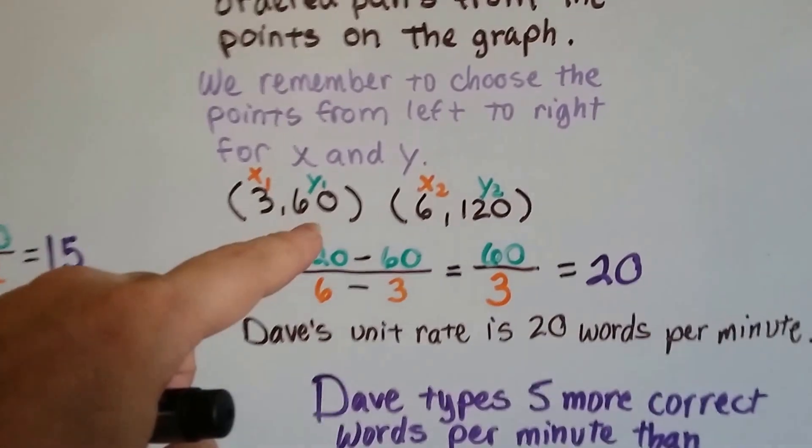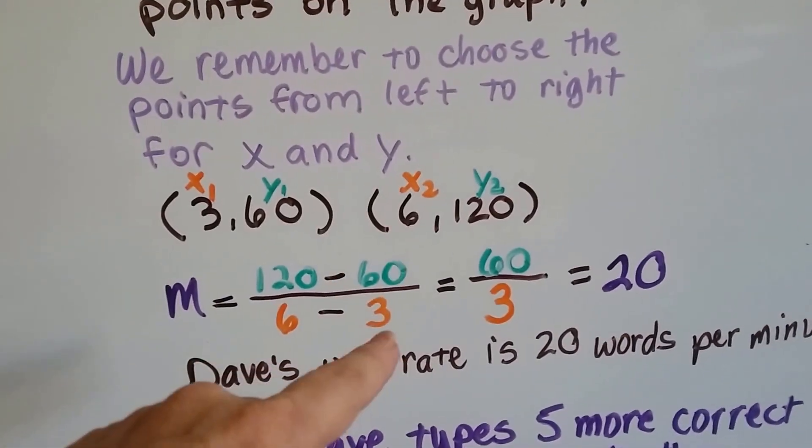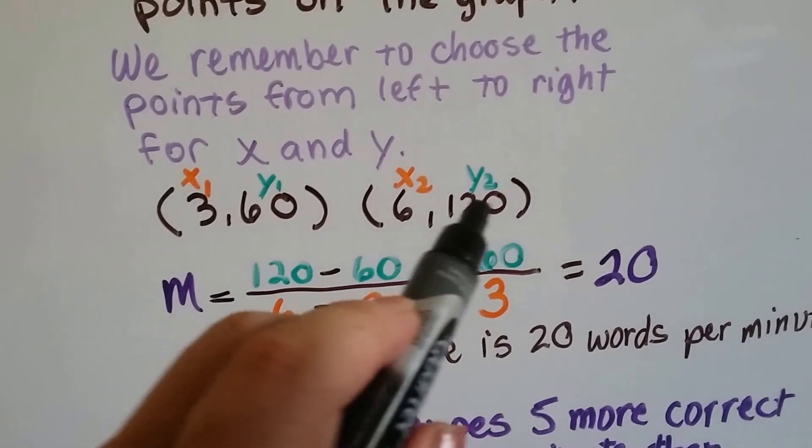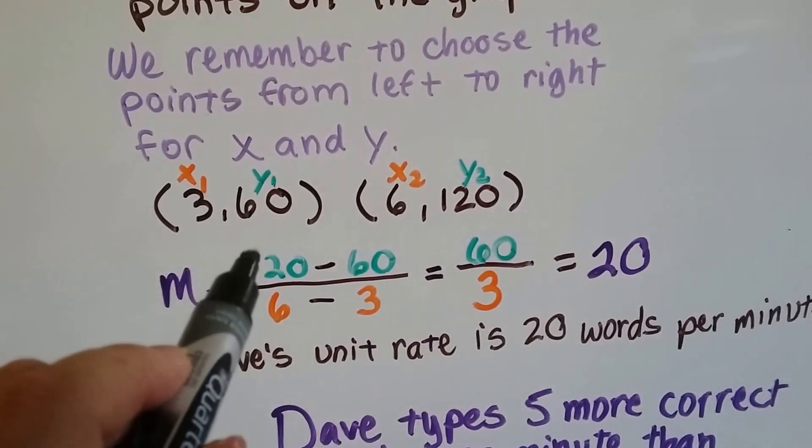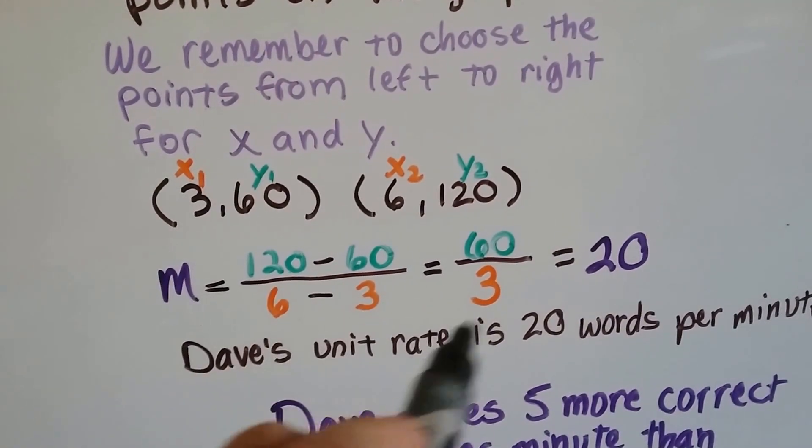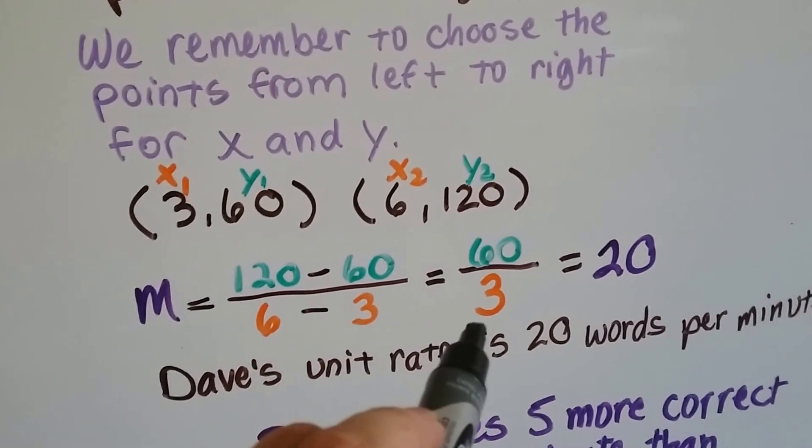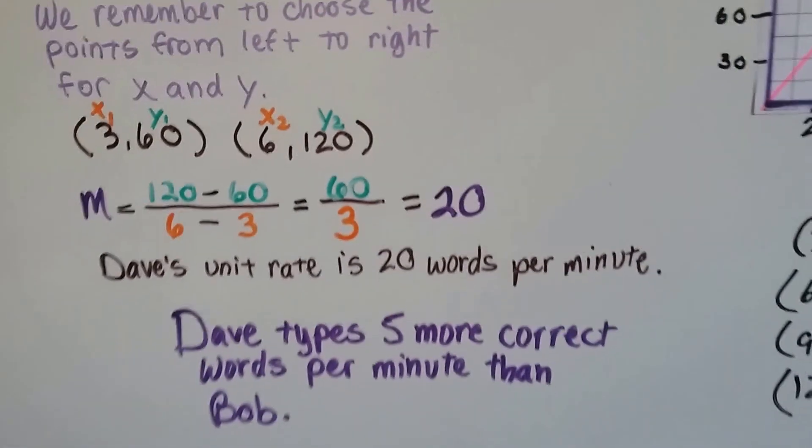So we got 3 comma 60 and 6 comma 120. We put the y2 and x2 first, and then the y1 and x1 second. And here's the y2, here's the y1. We do 120 minus 60, that's 60. And 6 minus 3 is 3. 6 minus 3. And we get 60 over 3 which simplifies to 20.